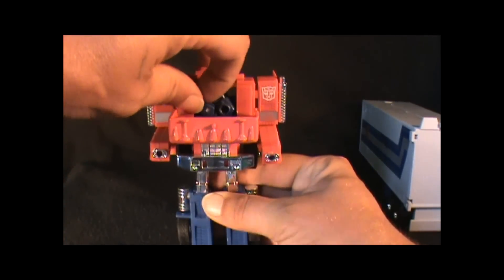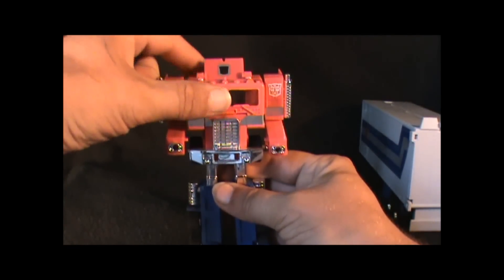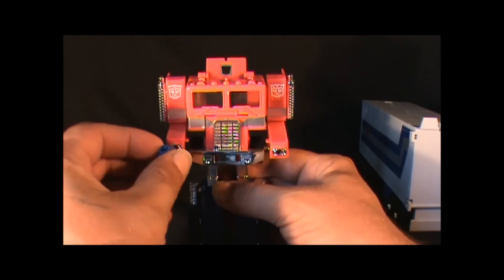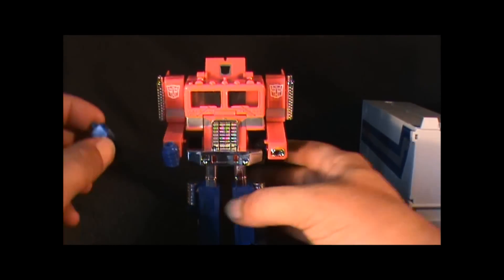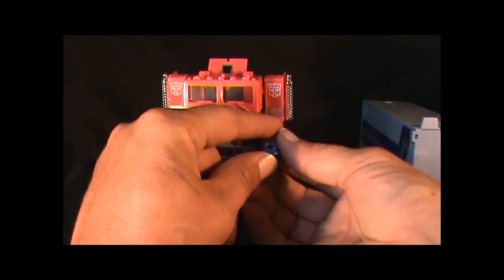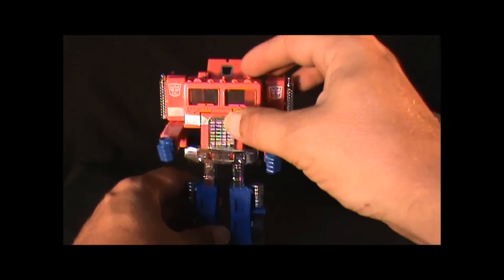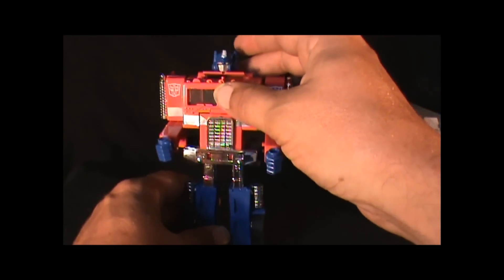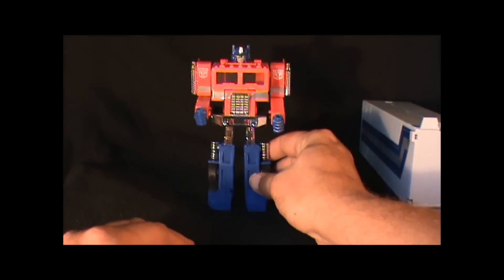There it goes. You can pull this chest down, here's the hands. Just like this, pull the chest out a little bit, hold down the head, lock it into place, and there you have G1 Optimus.